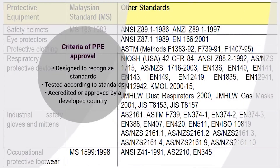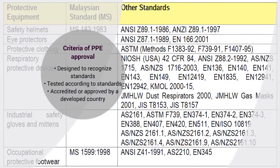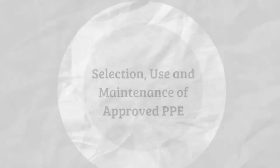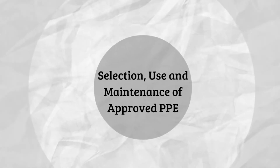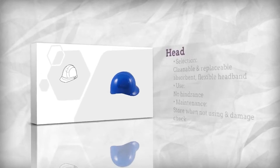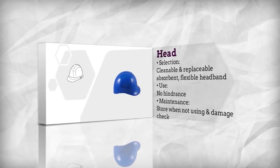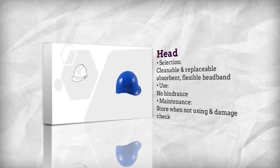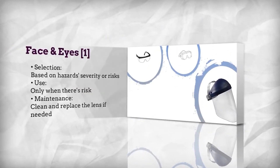PPE to be approved must achieve certain criteria as mentioned in the regulation. For each approved PPE, there are specific requirements for selection, usage, and maintenance. For instance, PPE for the head must be checked regularly for damage. Use eye protection only when there is a risk.